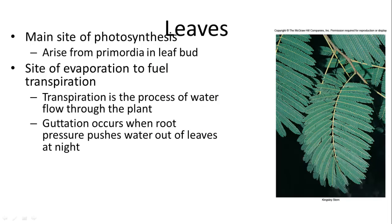Leaves are the main site of photosynthesis. Sometimes plants also have green stems which also photosynthesize, but leaves are generally where most photosynthesis occurs. Leaves arise from primordia in the leaf bud. They are also the site where evaporation occurs, fueling transpiration — the process by which fluid moves through the roots and stems up to the leaves.